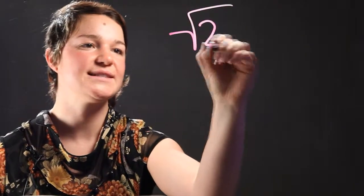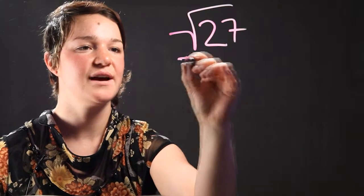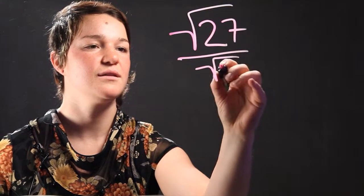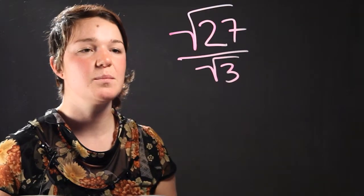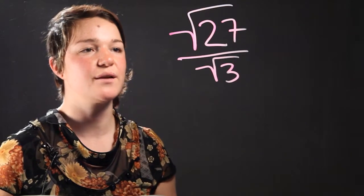We're going to start with radical 27 divided by radical 3. Now, there are a couple ways to do this, but let's review the rules of radicals.